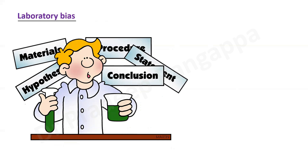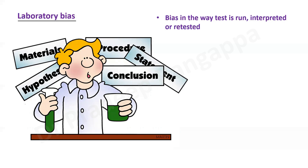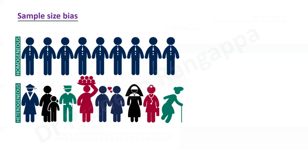Laboratory bias can occur in studies where tests are performed in an inappropriate way to determine results — for example, in a pandemic like COVID. The laboratory personnel conducting the test may influence the results of tests being conducted to alter the findings. A typical scenario is running an RT-PCR test to detect sensitivity or effectiveness, where laboratory personnel may have had influence in determining the outcome of that test. This is called laboratory bias: bias in the way a test is run, interpreted, or retested.